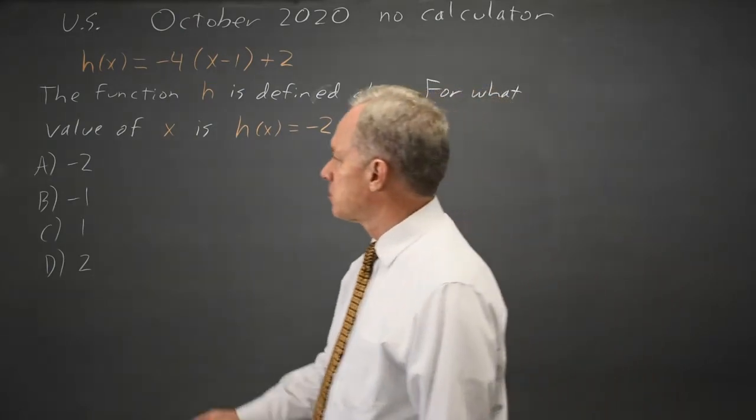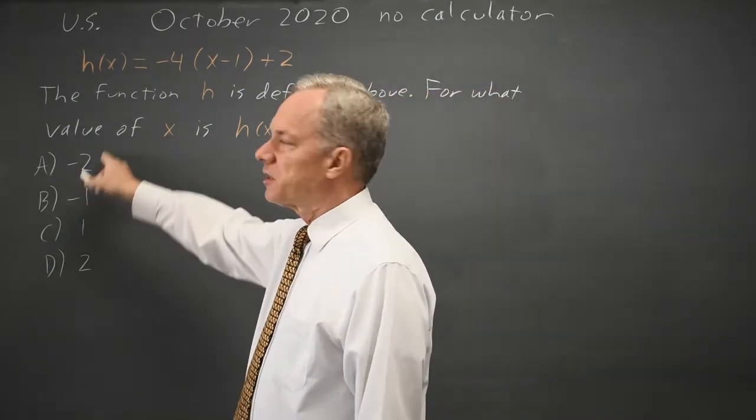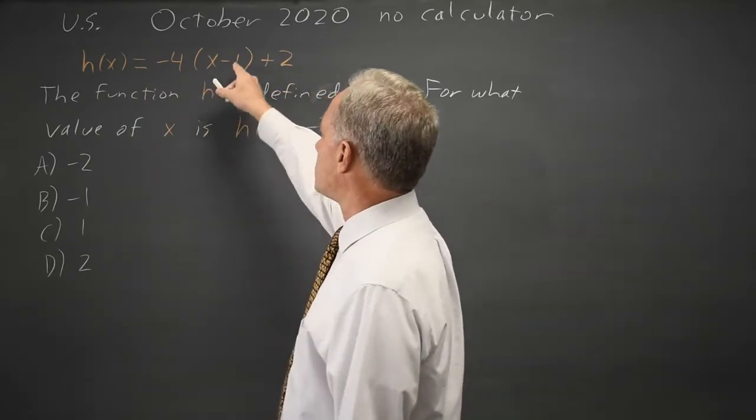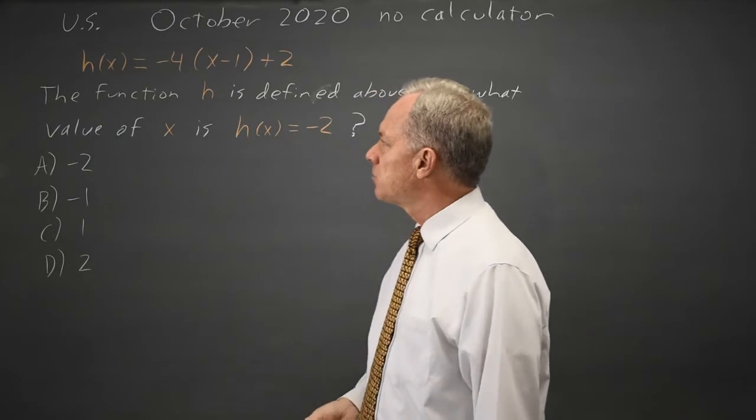They have answer choices here, so one option is to substitute in the answer choices and see which one gives us negative 2. The other is to set this expression equal to negative 2 and solve for x. I'll try both.